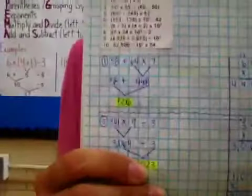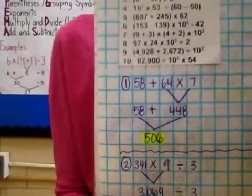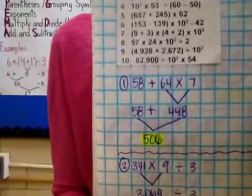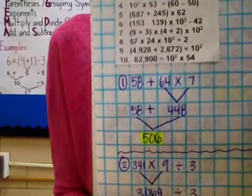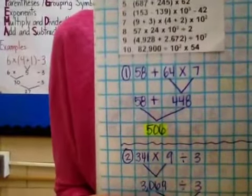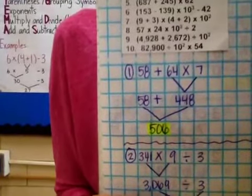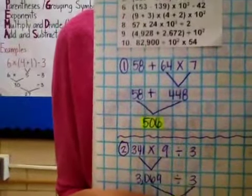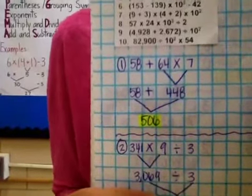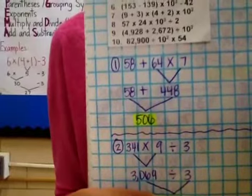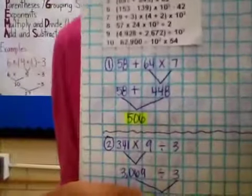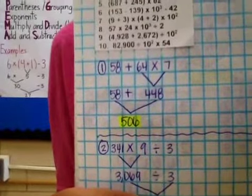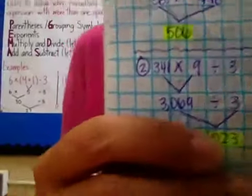For number one, your answer should be 506. I'm not going to show you the work — you need to figure out how to multiply 64 times 7 to get 448 on the work side, and then show how you added that to 58 to get 506.